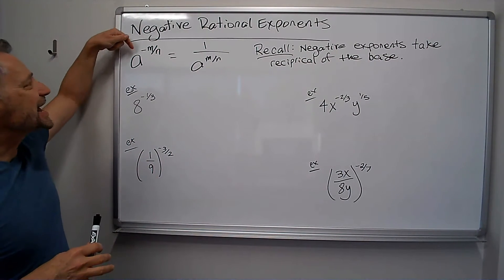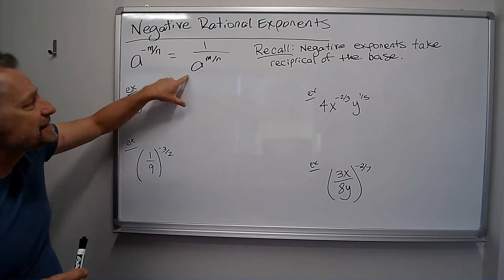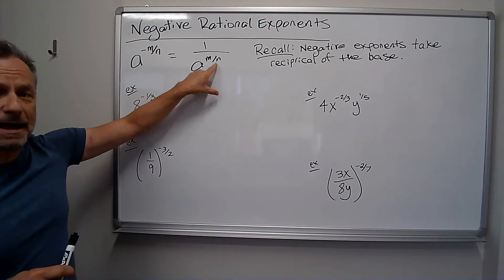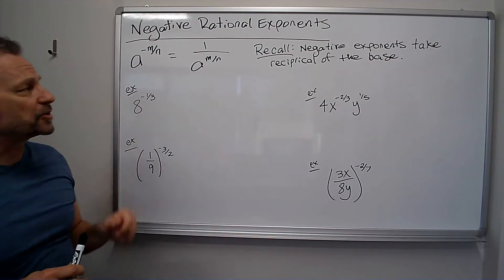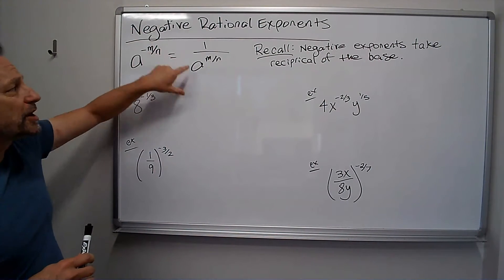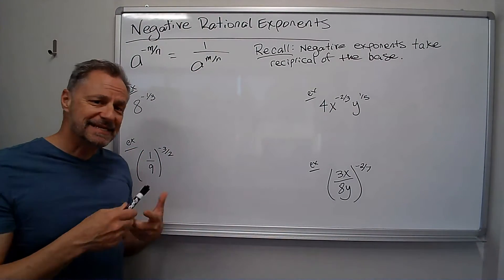So, by definition, a to the negative m/n, we flip over this, the a goes on to the bottom, the reciprocal, and it's just a to the m over n as the exponent. The negative's gone because I went from essentially being a numerator to being a denominator, I took the reciprocal. Let's see with some examples how that works.